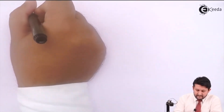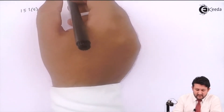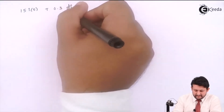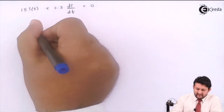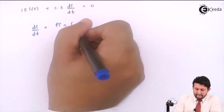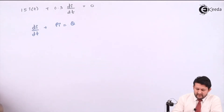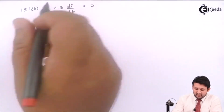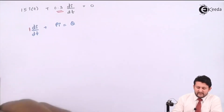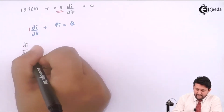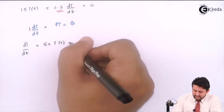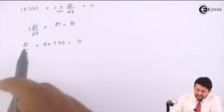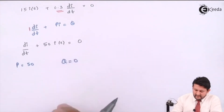Applying KVL: 15·i(t) + L·di(t)/dt = 0, where L = 0.3 henry, so 0.3·di(t)/dt + 15·i(t) = 0. Comparing this to the standard form di/dt + p·i = q, the coefficient must be 1, so divide throughout by 0.3. This gives di/dt + 50·i(t) = 0. Comparing, p = 50 and q = 0.